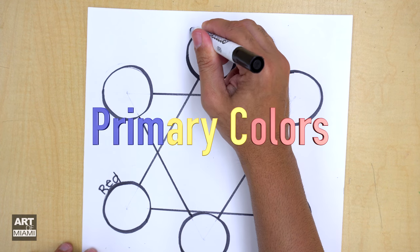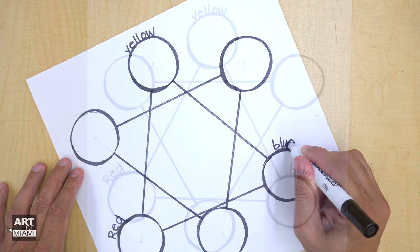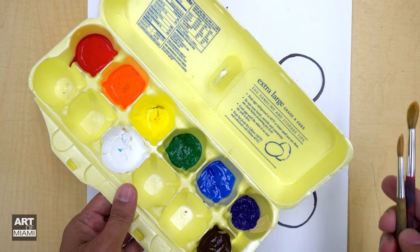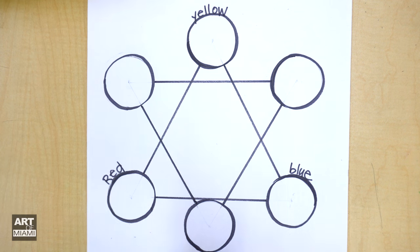Let's label the primary colors. Primary colors are the most important colors of the color wheel. That's red, yellow, and blue. With those colors, we can make all other colors. But we can't make the primary colors. It's impossible.